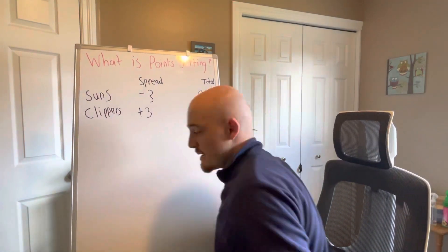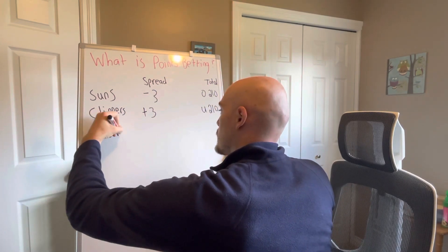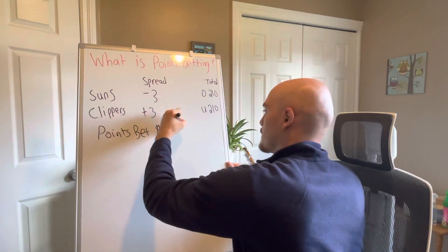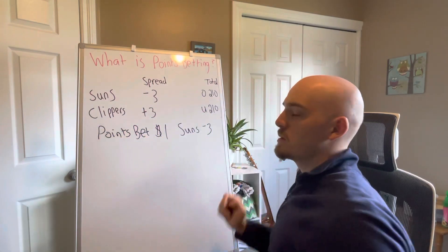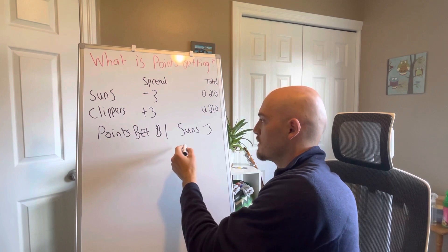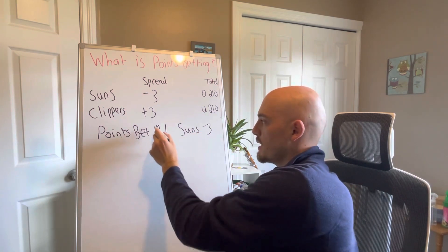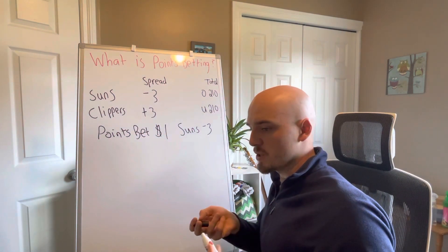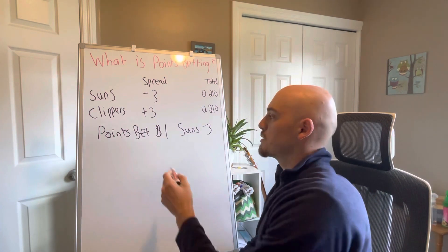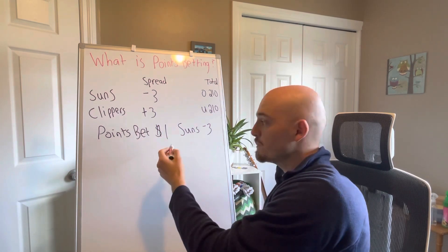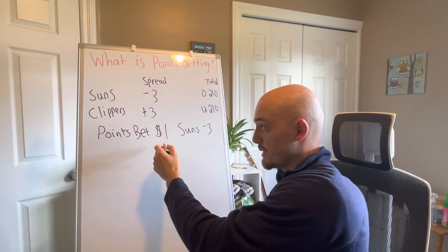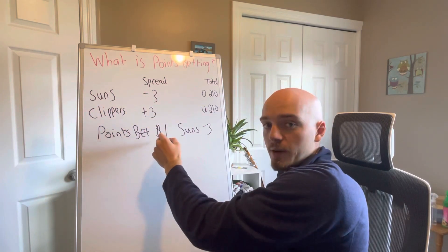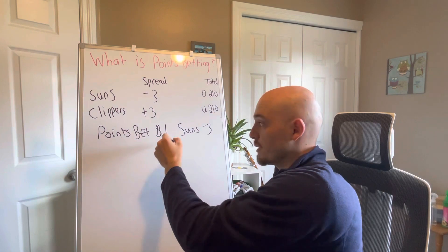Let's say that we are going to PointsBet $1 on the Suns minus three. Instead of having odds, the odds shift to a variable amount, which is this $1. You're setting how much you want to wager in relation to how well the Suns do. Essentially what you're doing is you're betting $1 or whatever on each extra point that the Suns cover the spread by, you're going to get an extra dollar. And each point that the Suns don't cover the spread by, you're going to lose an extra dollar.